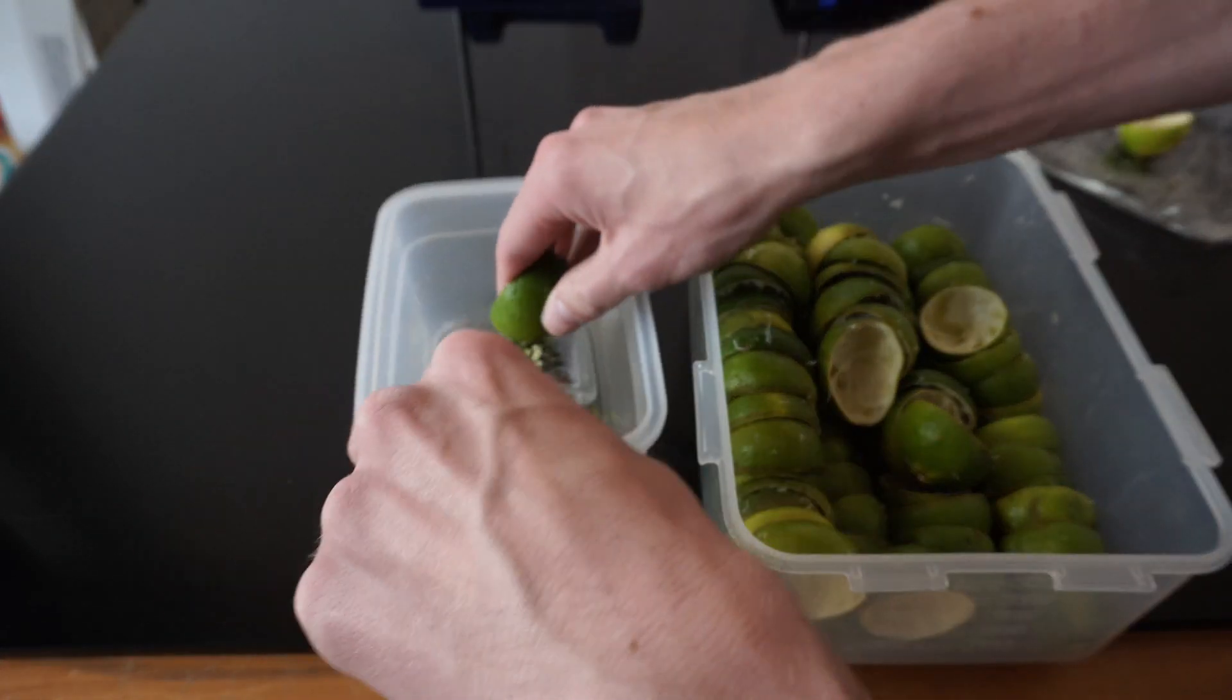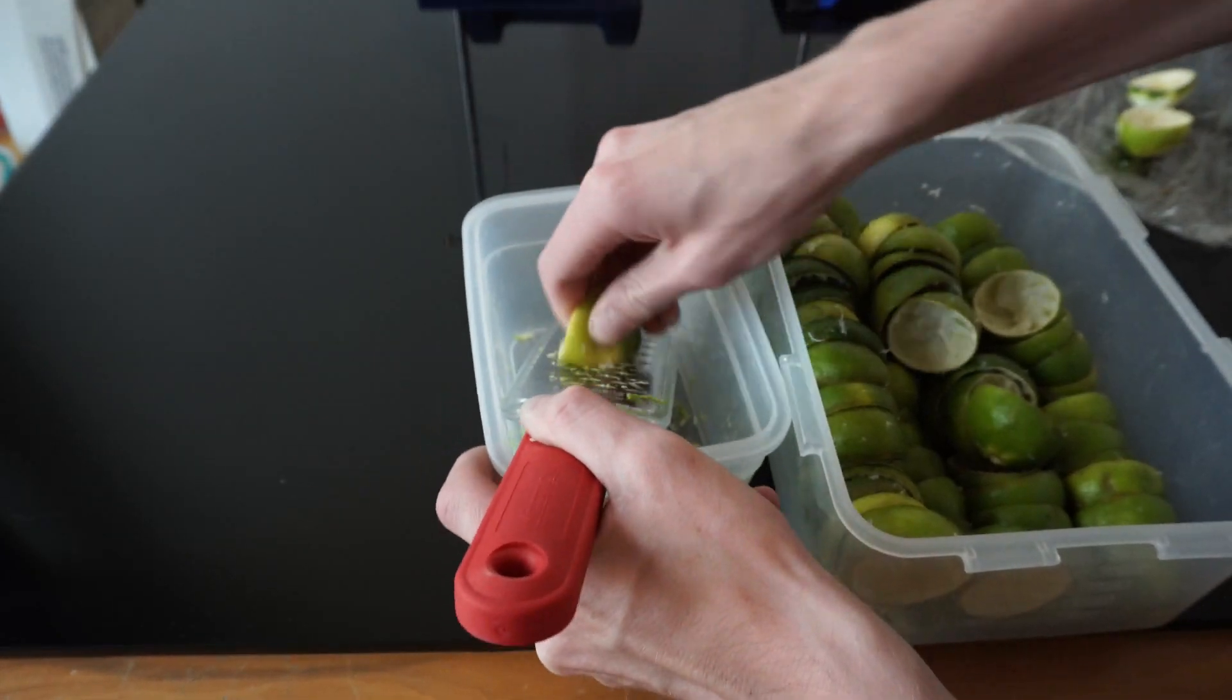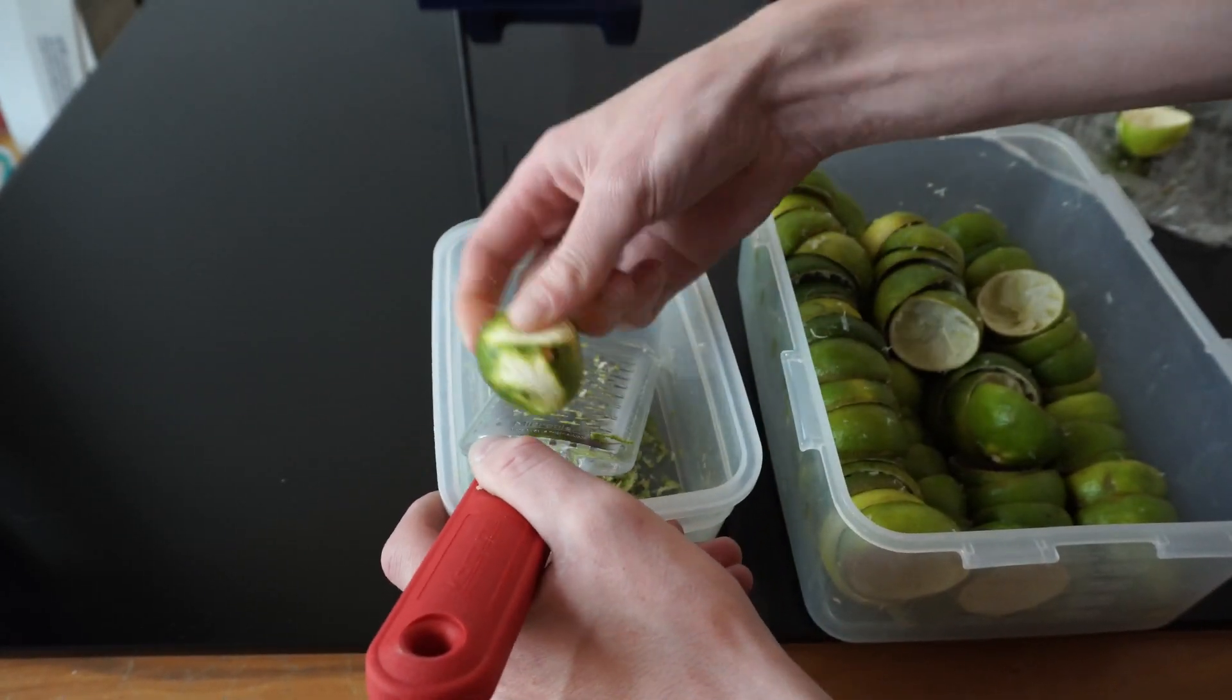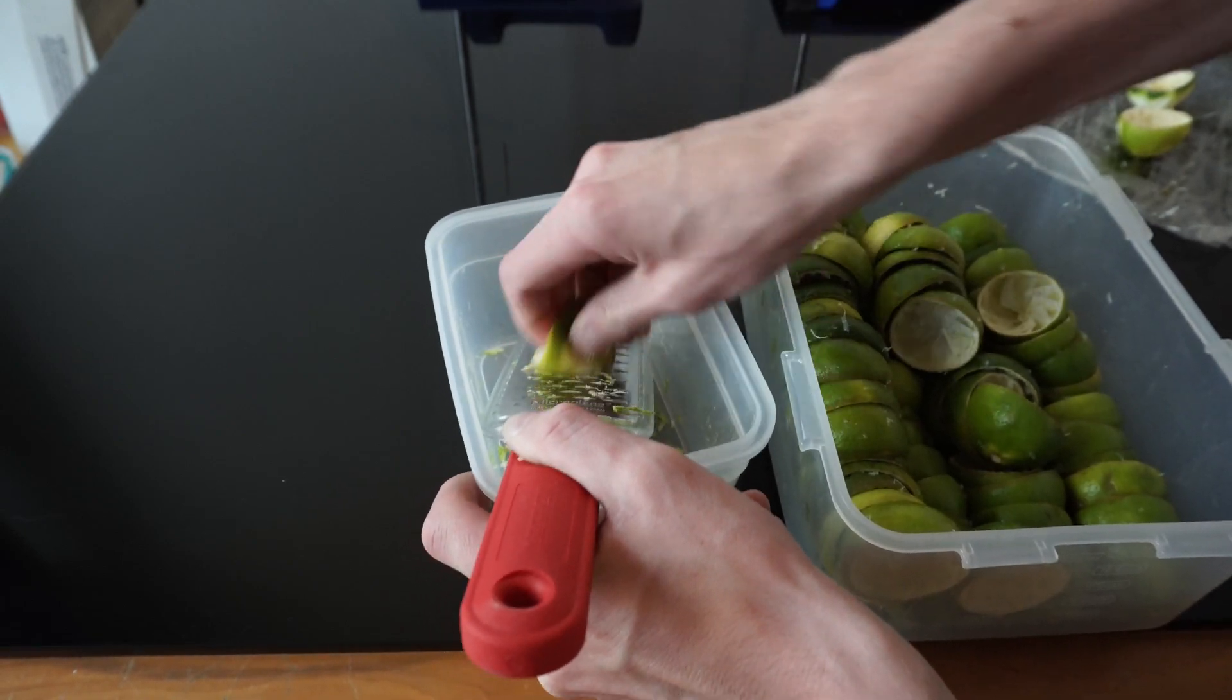I zested about 30 limes, which gave me in total about 200 grams of lime zest. The process of pulling limonene from citrus is very easy and straightforward.